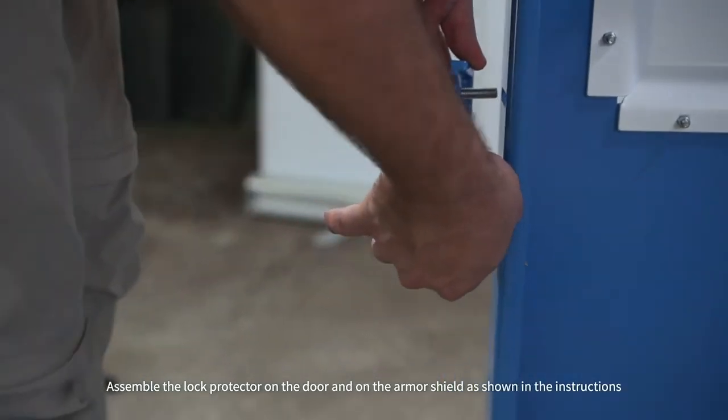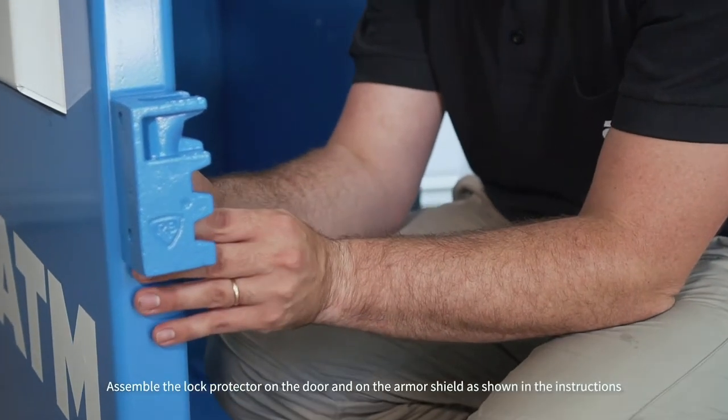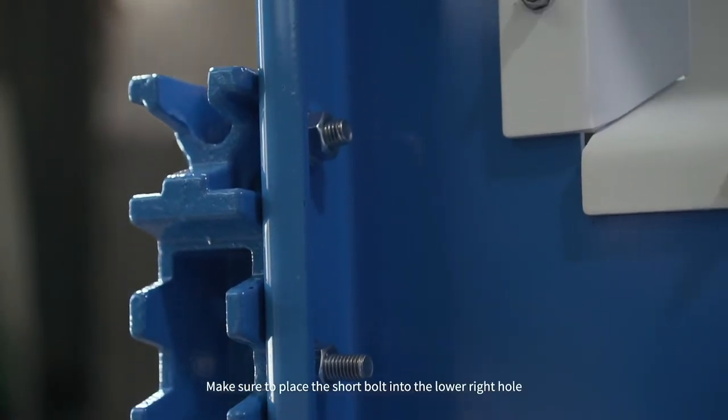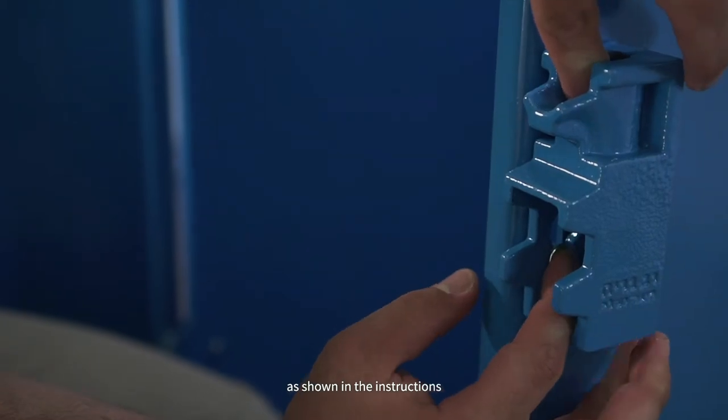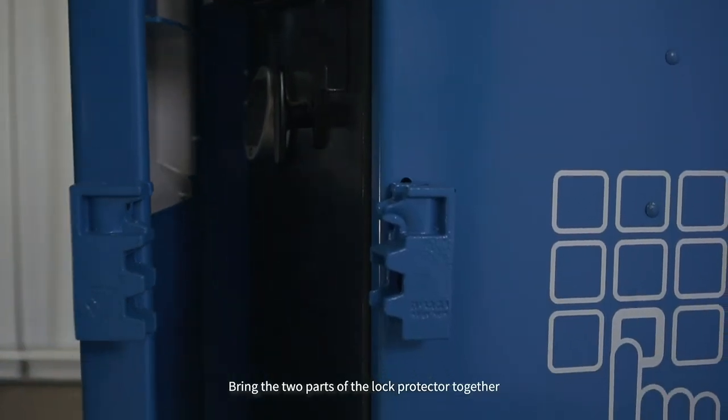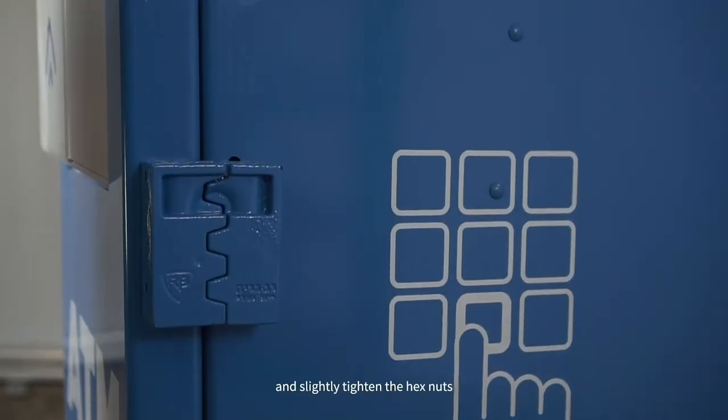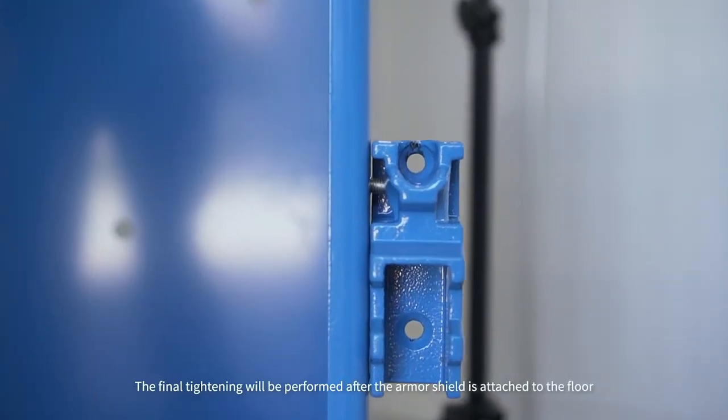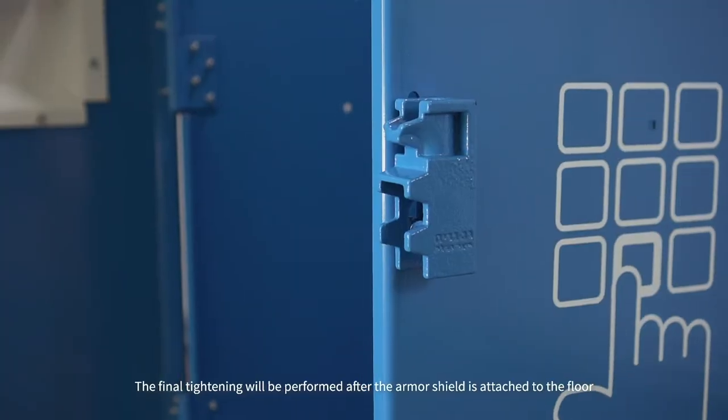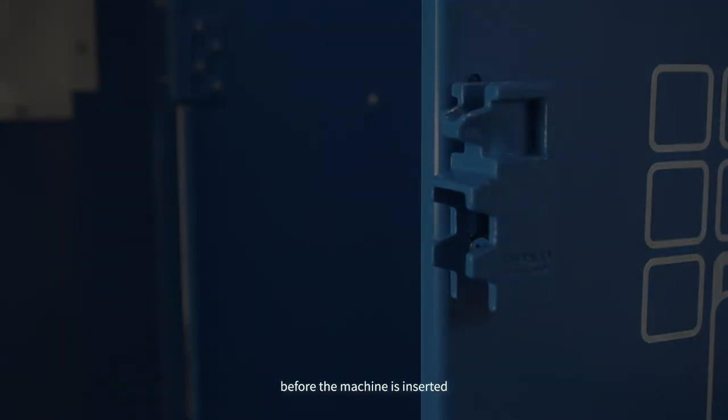Assemble the lock protector on the door and on the armor shield as shown in the instructions. Make sure to place the short bolt into the lower right hole as shown in the instructions. Bring the two parts of the lock protector together and slightly tighten the hex nuts. The final tightening will be performed after the armor shield is attached to the floor, before the machine is inserted.